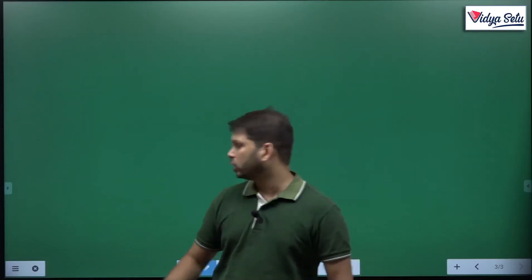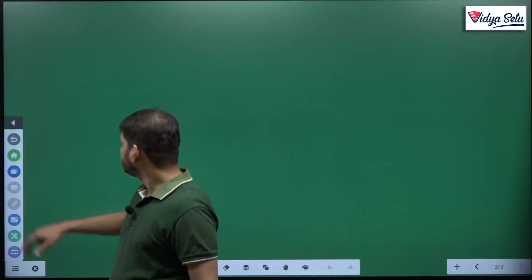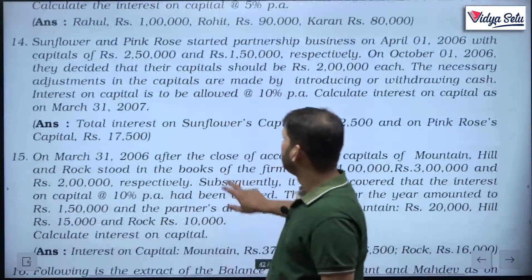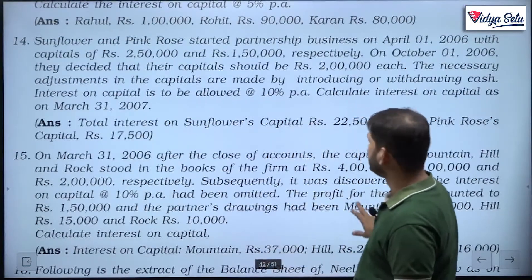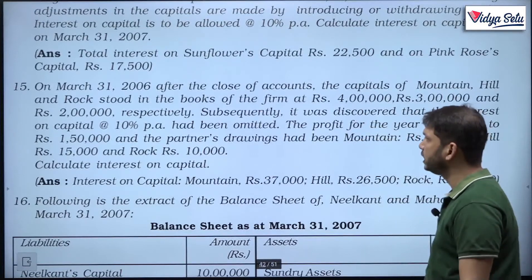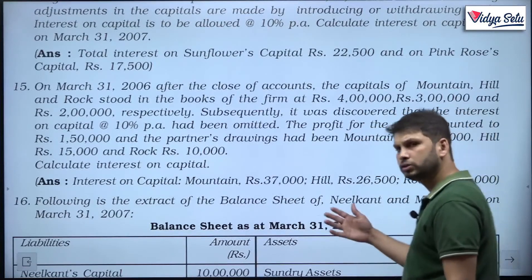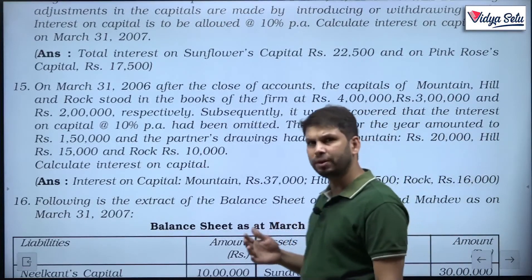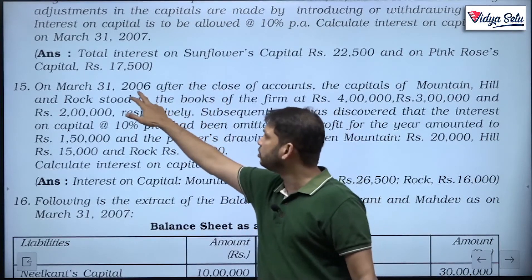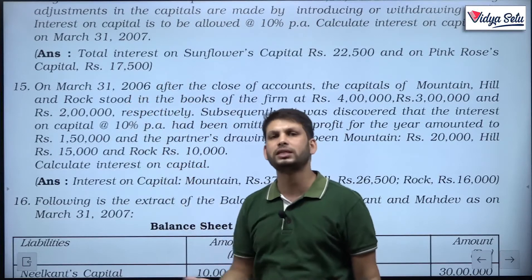Let us look at the next question. Question number 15 says that on March 31st 2006 after the close of the accounts. Most of you must be getting everything the same, just instead of 2006 NCRT must have made 2016.